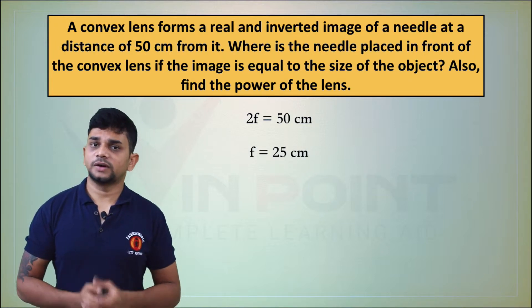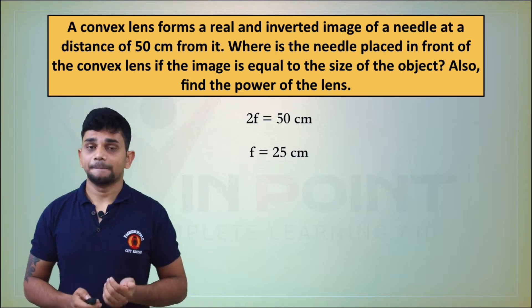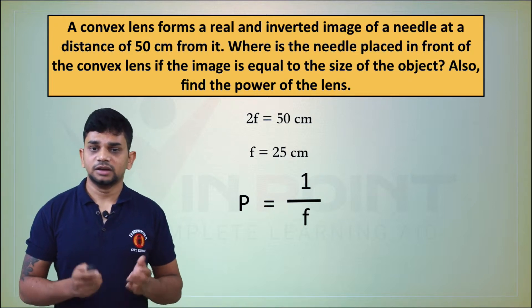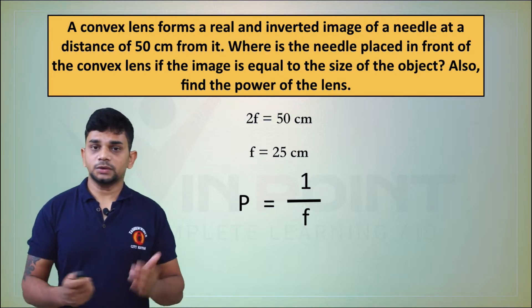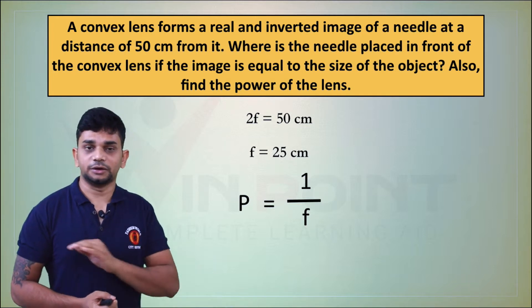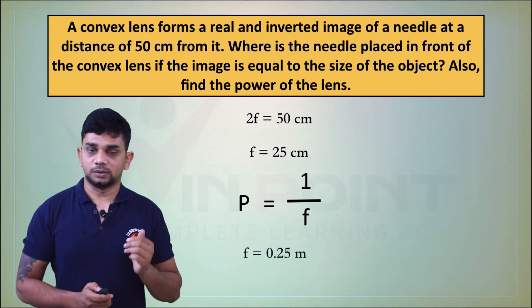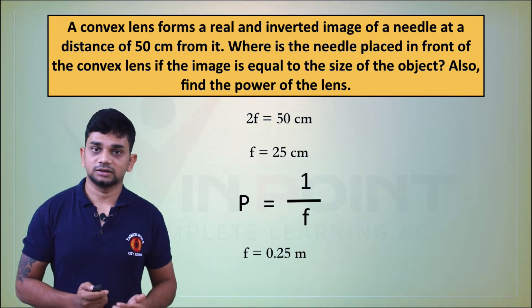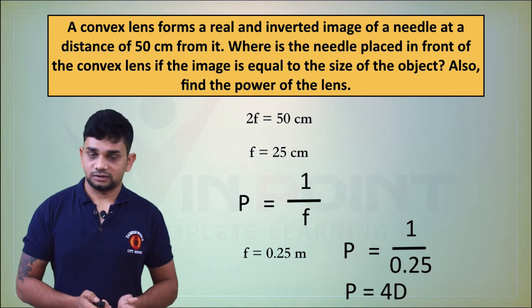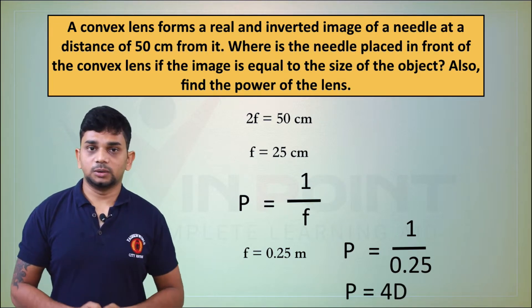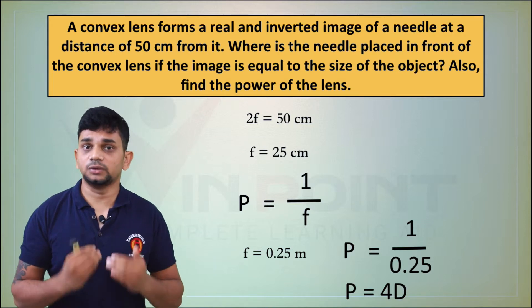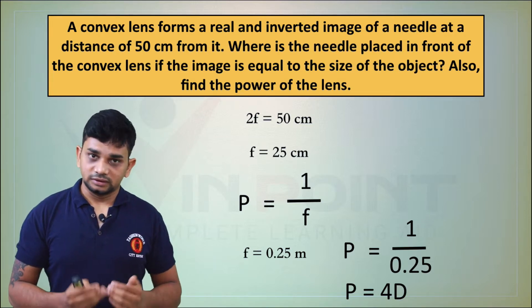From this value we can find the power. The equation for power is P equals one by f. The value of f is 25 centimeters. Since it is a convex lens, the focal length is positive. We need to convert centimeters into meters by dividing by 100, giving focal length equal to 0.25 meter. Then P equals one by 0.25, which equals 4 diopter. The power of the lens is 4 diopter, with the object placed 50 centimeters from the convex lens.